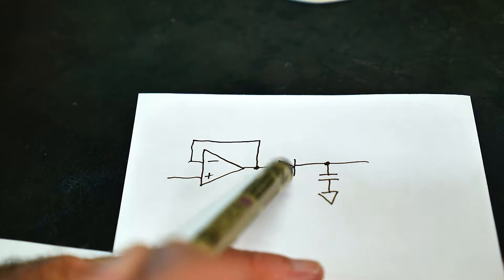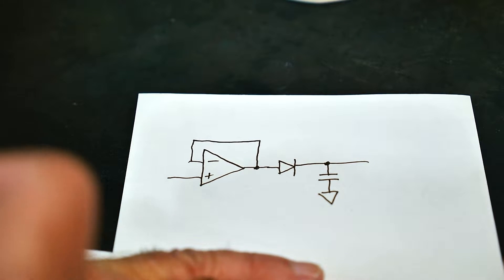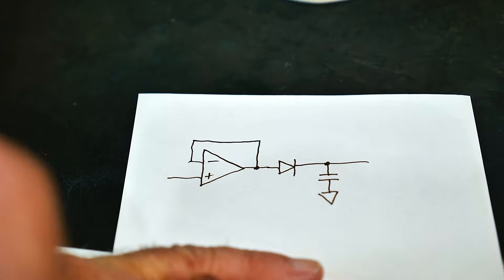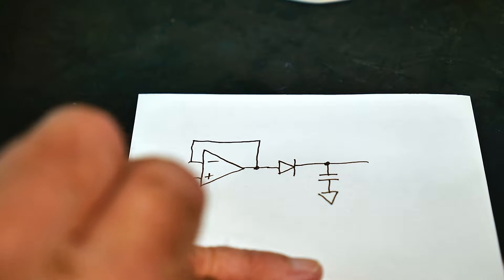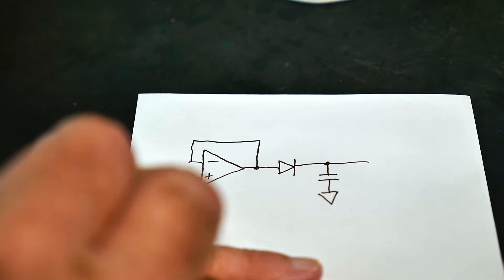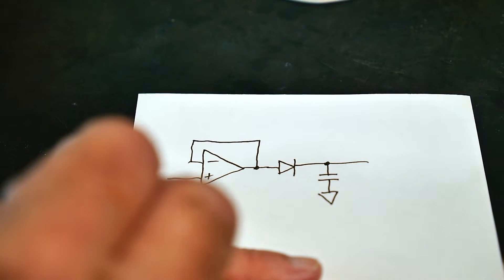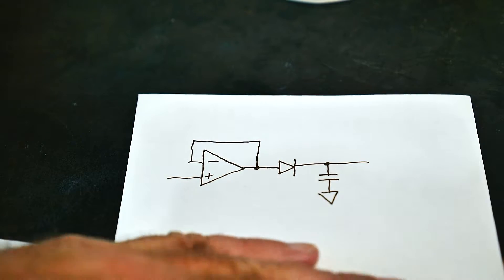So this works great. The only problem is this diode drop. If you have 0.7 volts of diode drop and you only have a 1 volt signal, well you only have about 0.3 volts left over so that's not going to do you a lot of good. How can we get rid of that diode drop?